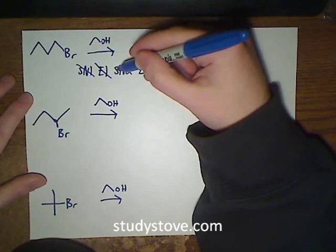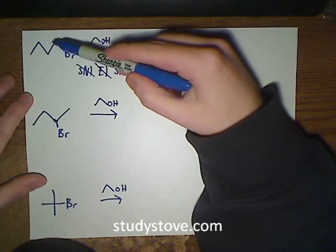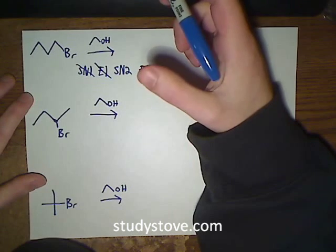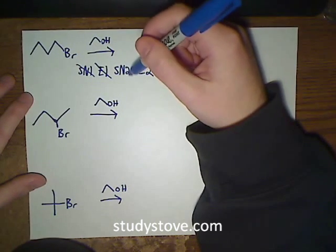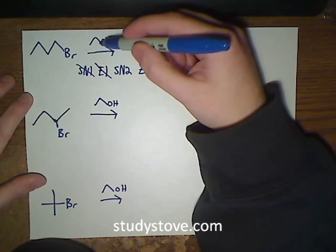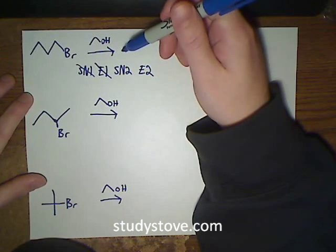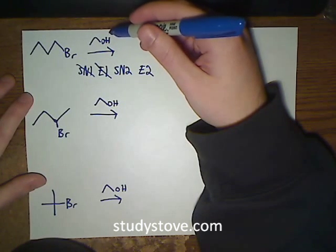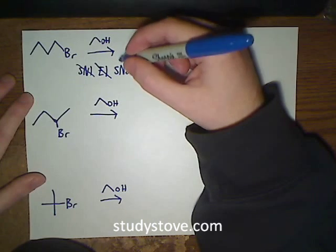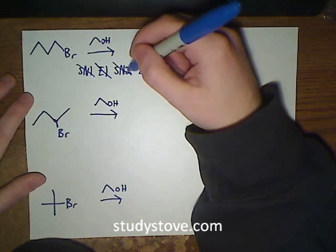In order to have an SN2 reaction on a primary carbon, we need to have a good nucleophile. And you should know that ethanol is just not a very good nucleophile, and that's just something you need to be aware of, that alcohols are not very good nucleophiles. So because of that, we can't have an SN2 reaction.